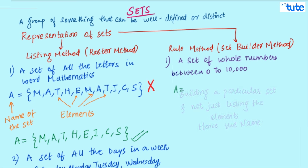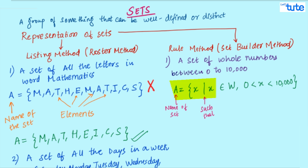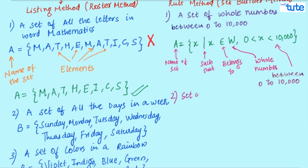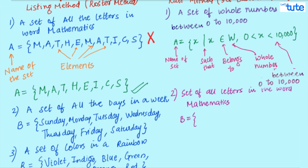Now, a set using set builder method is written like this. Can we represent the set of all letters in a word mathematics in the form of a set builder form? Well, yes. Let's name this set as B. B is a set of all X such that X is the letter of the word mathematics.